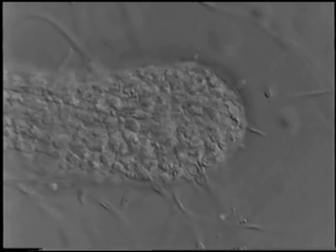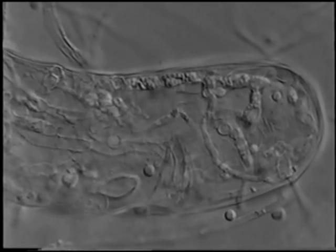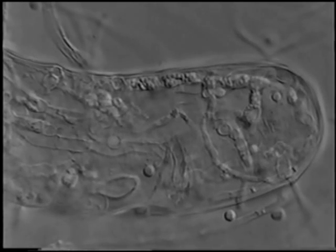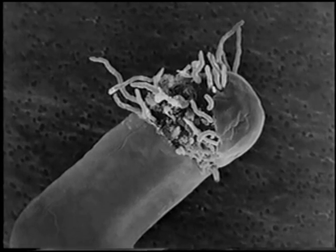An infected egg at an early stage. And here, at a later stage when hyphae are visible inside. This scanning electron micrograph of a crushed egg allows a view of the dense mass of hyphae inside the shell.